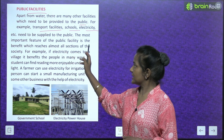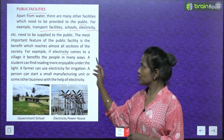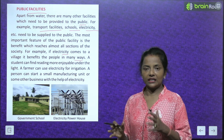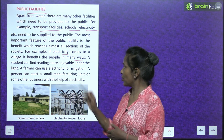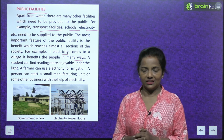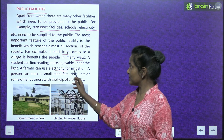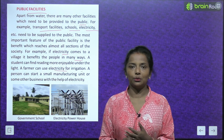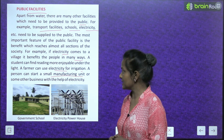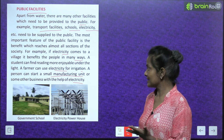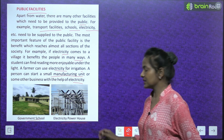The most important feature of public facilities is that the benefit reaches almost all sections of society. For example, if electricity comes to a village, it benefits people in many ways. A student can find reading more enjoyable under the light. A farmer can use electricity for irrigation. A person can start a small manufacturing unit or business with the help of electricity — government school, electricity, powerhouse.